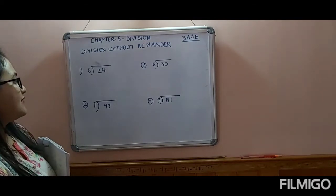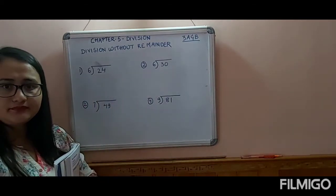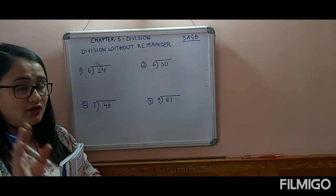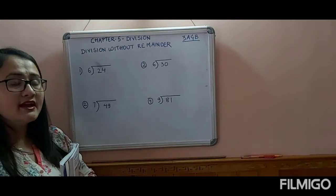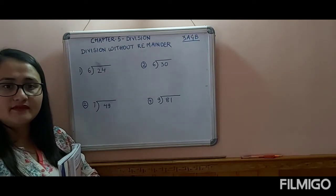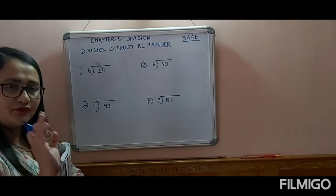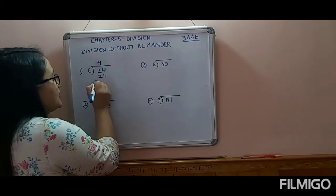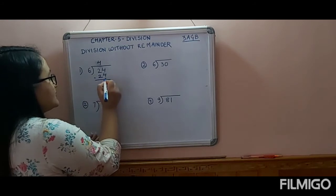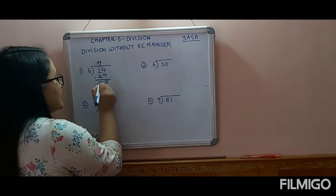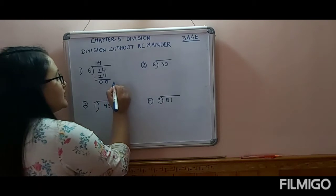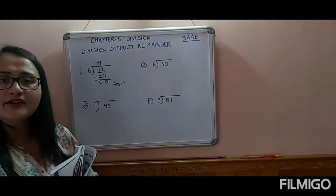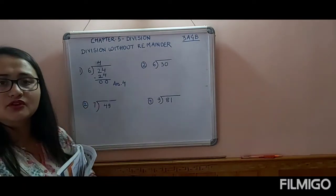Now divide 24 by 6. Tell me the table of 6 — stop when 24 comes: 6 ones are 6, 6 twos are 12, 6 threes are 18, 6 fours are 24. So we write 4. Then we minus: 24 minus 24 is 0. Your answer is 4, with no remainder.